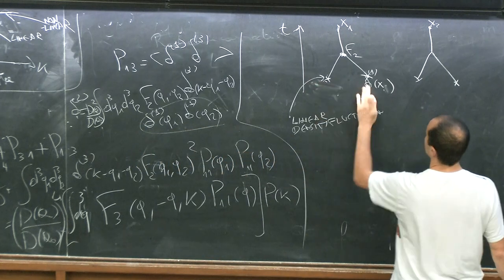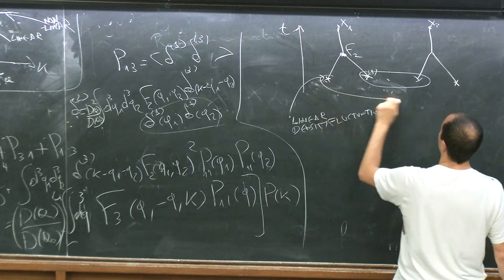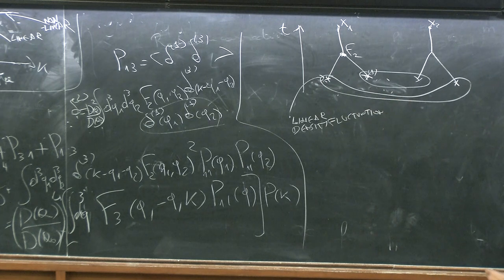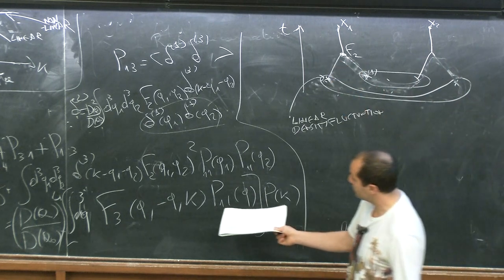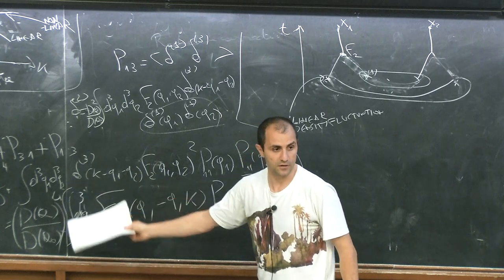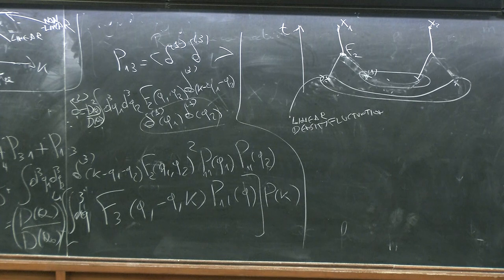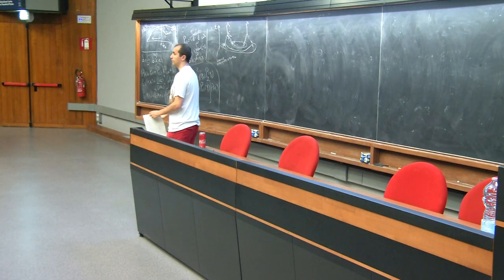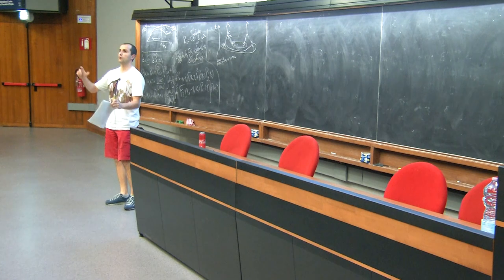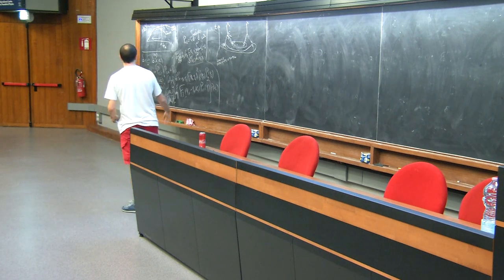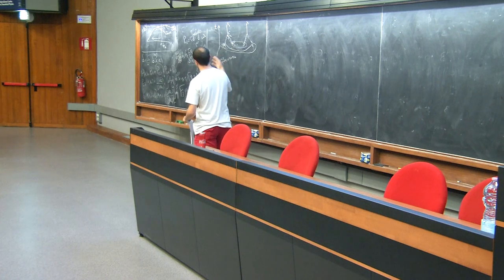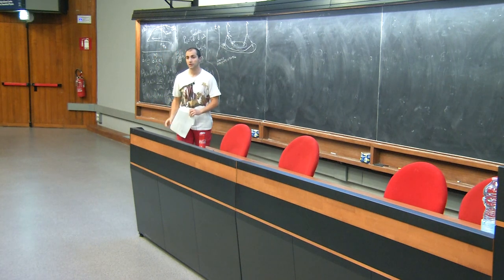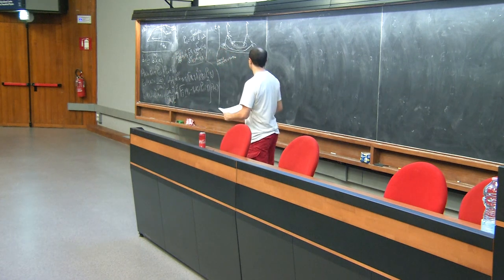For P_31, one solution is the linear solution delta_1, and the other is delta_3. What is delta_3? It is the insertion twice of the quadratic vertex. Remember, the theory has only one quadratic vertex — there was no cubic vertex. So delta_3 uses a quadratic vertex twice, by splitting a line and then splitting again. When you contract the primordial fluctuations appropriately, you form a closed loop — a single integral — identical in structure to quantum field theory diagrams.